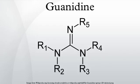Guanidinium chloride has chaotropic properties and is used to denature proteins. Guanidine hydrochloride is known to denature proteins with a linear relationship between concentration and free energy of unfolding. In aqueous solutions containing 6M guanidinium chloride, almost all proteins lose their entire secondary structure and become randomly coiled peptide chains.